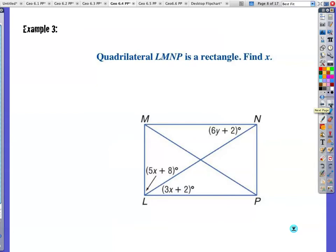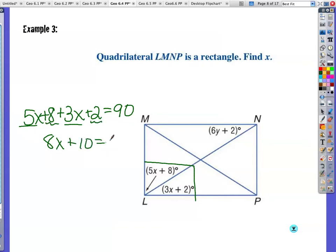Example 3, quadrilateral LMNP is a rectangle. Find x. One of the first things I'm going to point out is special about a rectangle. Not only are the diagonals congruent, the other special rule is that your four angles are all going to be 90 degrees. So this is a big right angle here. So 5x plus 8 plus 3x plus 2, those two have to total up to be 90 degrees. So 8x plus 10 equals 90. Subtract 10 from both sides, I get 8x equals 80. Divide both sides by 8, I get x equals 10.